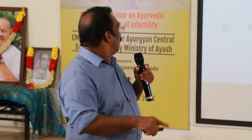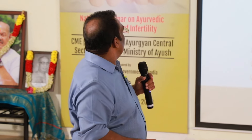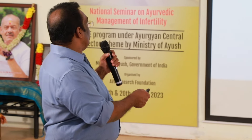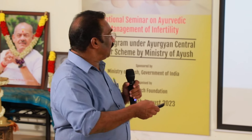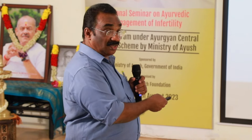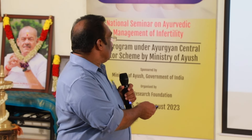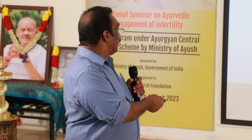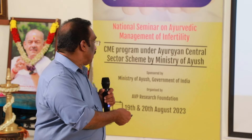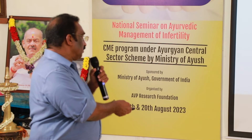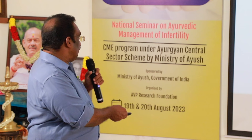Azoospermia may be pre-testicular, testicular, or post-testicular. Treatment of pre-testicular azoospermia includes GnRH therapy, HCG followed by HMG, or finally donor insemination. Testicular azoospermia is managed with testicular sperm extraction (TESE), testicular sperm fine needle aspiration (TESA), followed by ICSI, or donor insemination. Post-testicular azoospermia is treated with vaso-epididymostomy, microsurgical epididymal sperm aspiration (MESA), or percutaneous epididymal sperm aspiration (PESA).